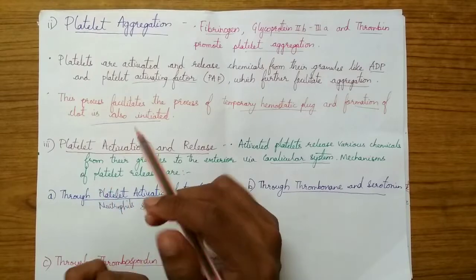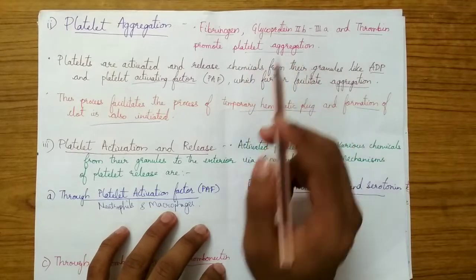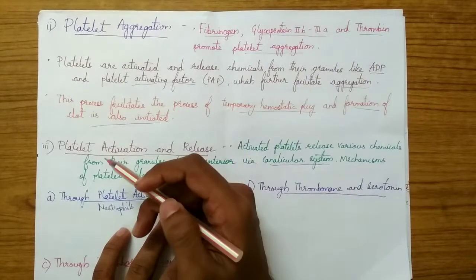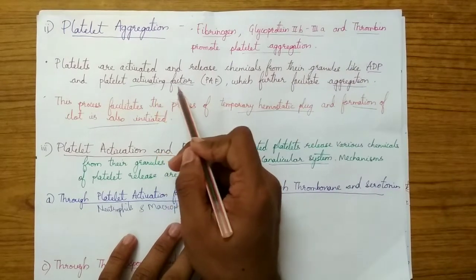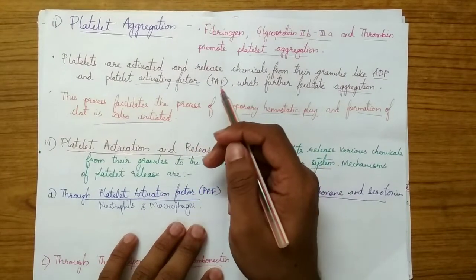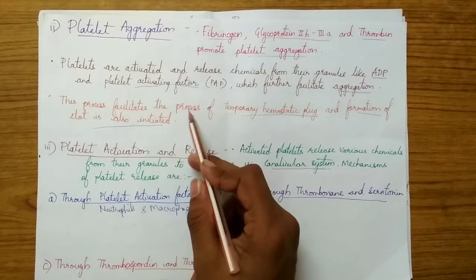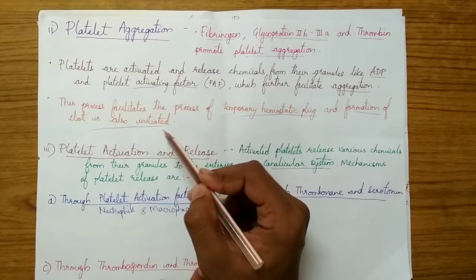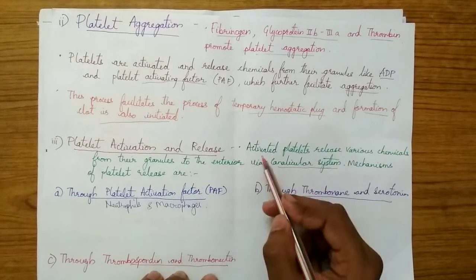Platelet aggregation follows immediately after platelet adhesion. It is promoted by three main factors: fibrinogen, glycoprotein 2b/3a, and thrombin. These activated platelets release chemicals from their granules — such as ADP and platelet activating factor — which further facilitate the aggregation process in a cascade manner. This process facilitates the formation of the temporary hemostatic plug and also initiates clot formation.